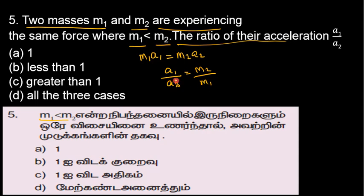Since m1 is less than m2, the value m2 by m1 is greater than one. Therefore, a1 by a2 is greater than one. So the answer is option c, greater than one. This is a simple thing.